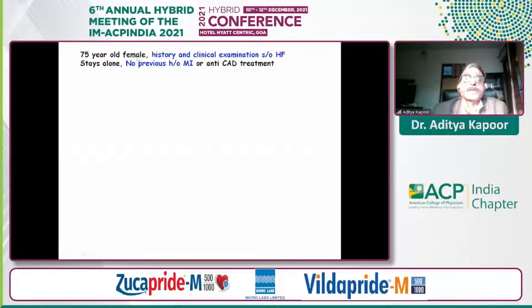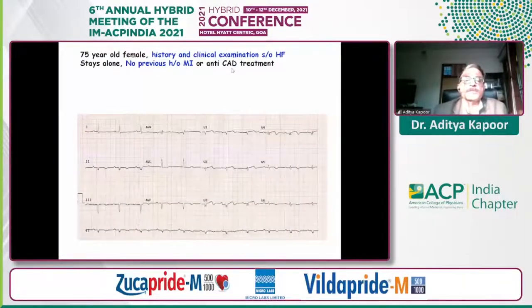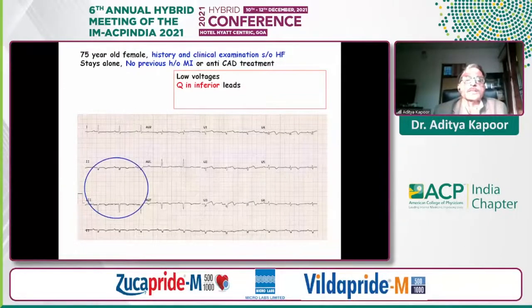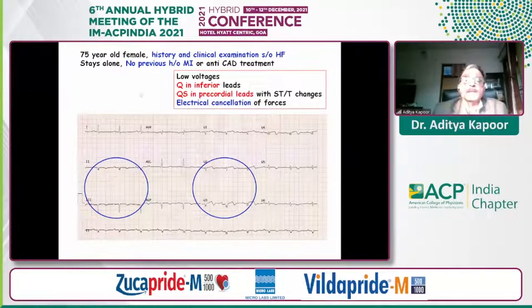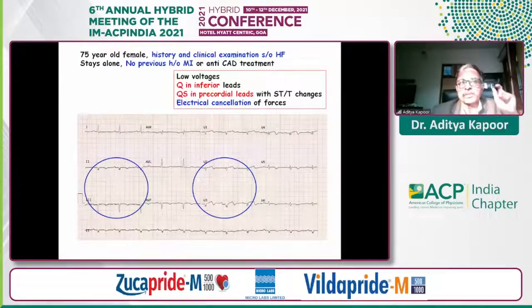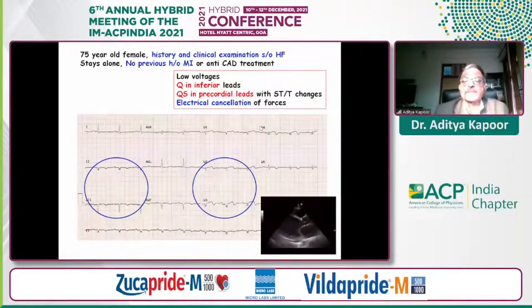Another patient — a 75-year-old female with heart failure and no previous history of coronary artery disease. The ECG shows low voltages with QS complexes in the inferior leads and precordial leads. Whenever you find such a pattern in heart failure, you diagnose MI, but the low voltages are due to electrical cancellation of forces. Low voltage also teaches us there is myocardial scarring — indicating dilated or ischemic cardiomyopathy, as was confirmed by echo and subsequently by angiogram.